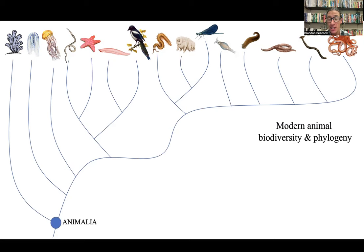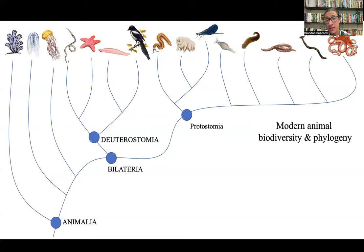We can put on this tree a lot of helpful taxa to understand evolution. Here's the common ancestor of all animals — that node is called Animalia. All of these things — sponges, jellies, starfish, all the way to the octopus — these are all animals. It might surprise you to see a starfish so close to us vertebrates as opposed to something like an insect or an octopus. But that's the truth.